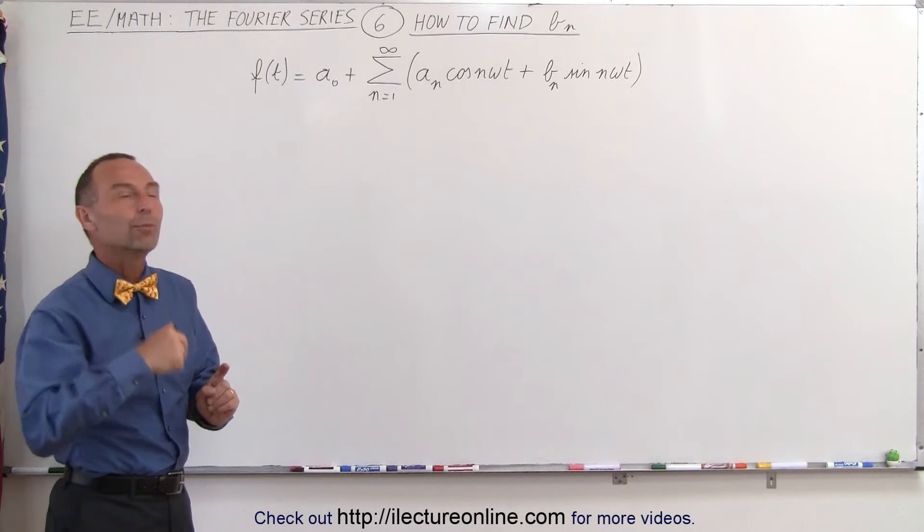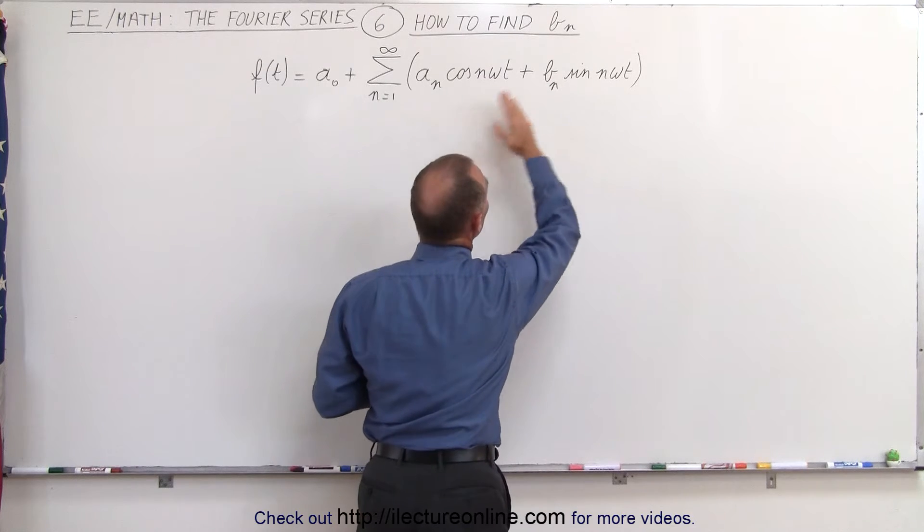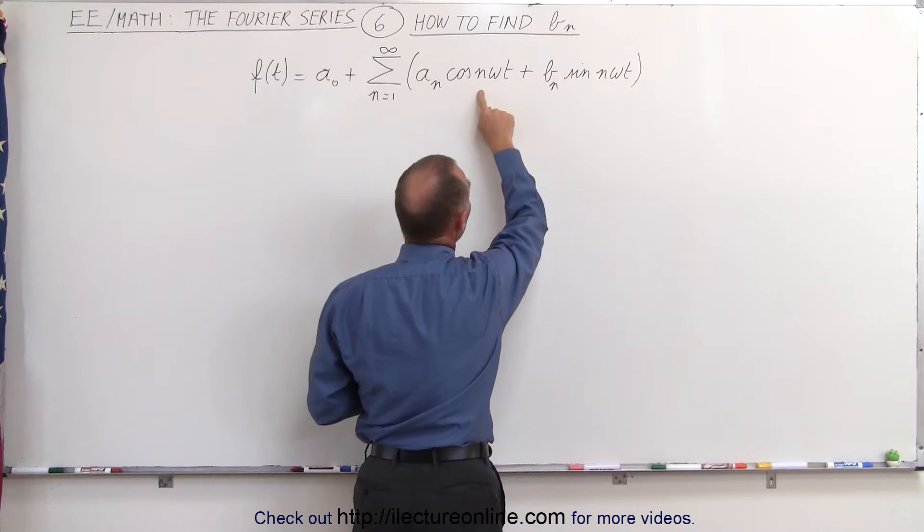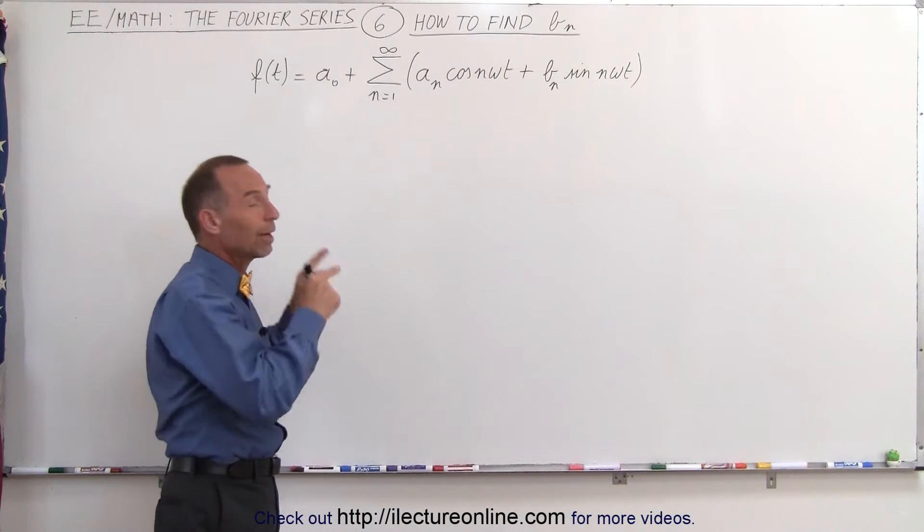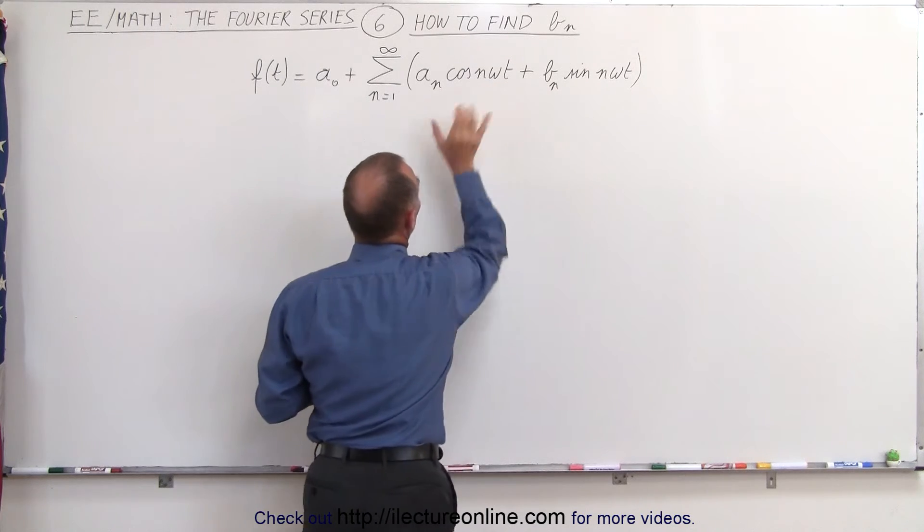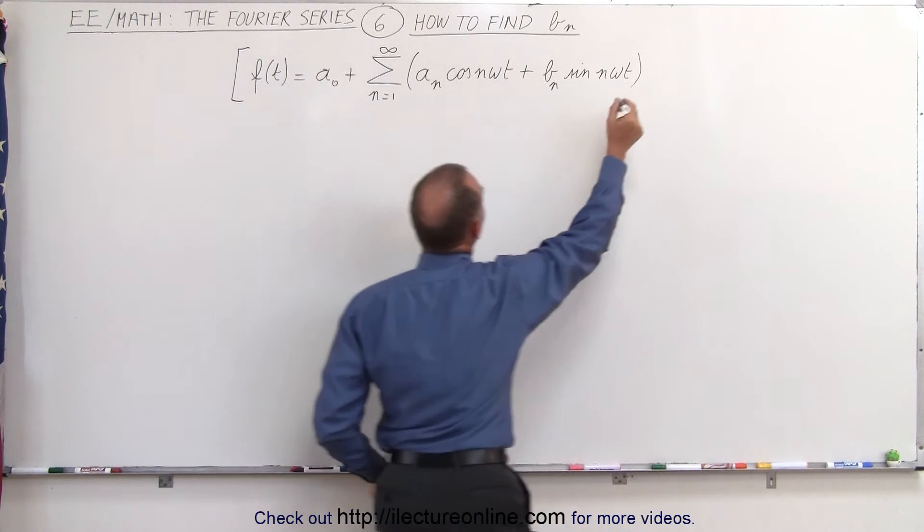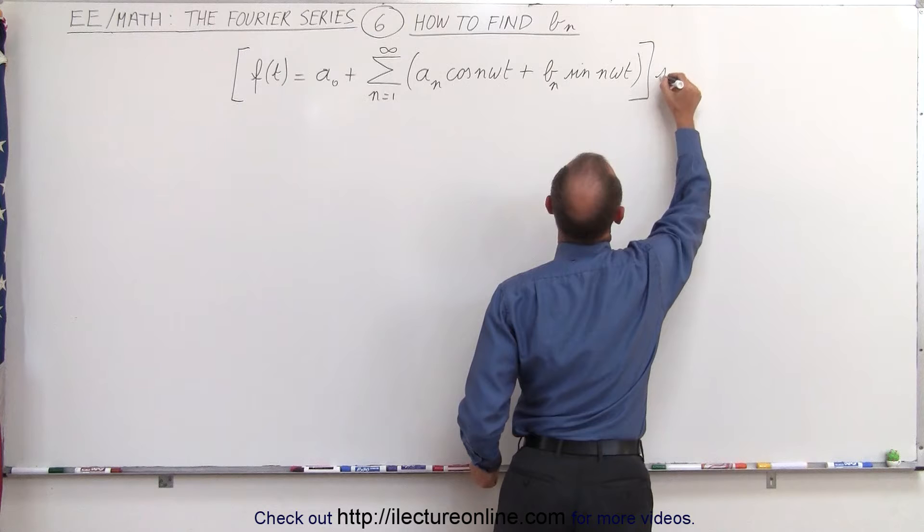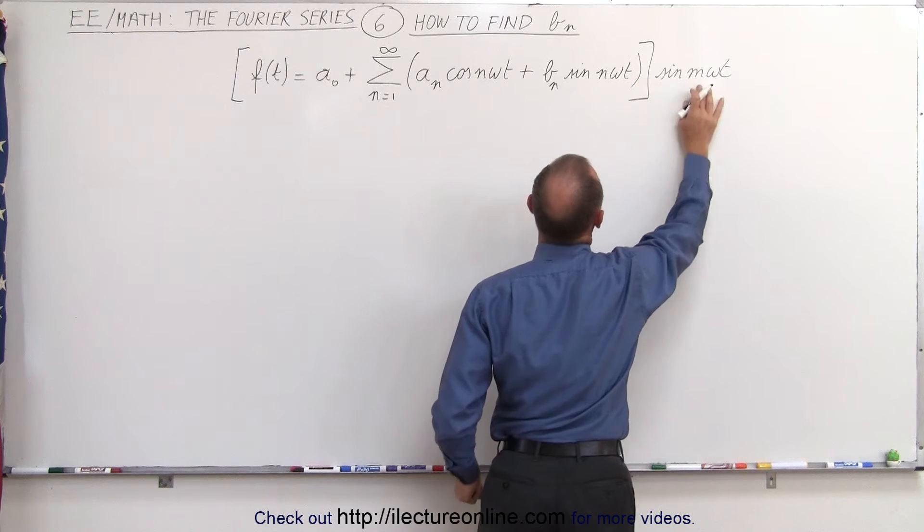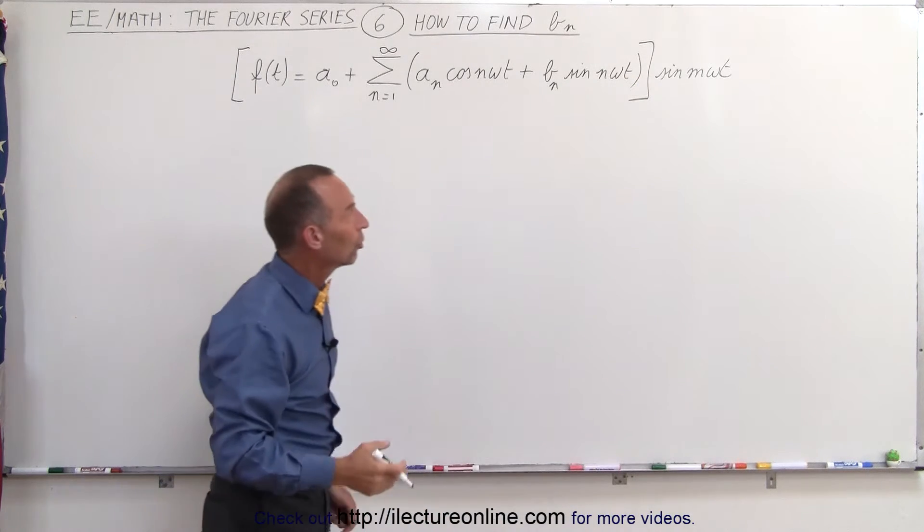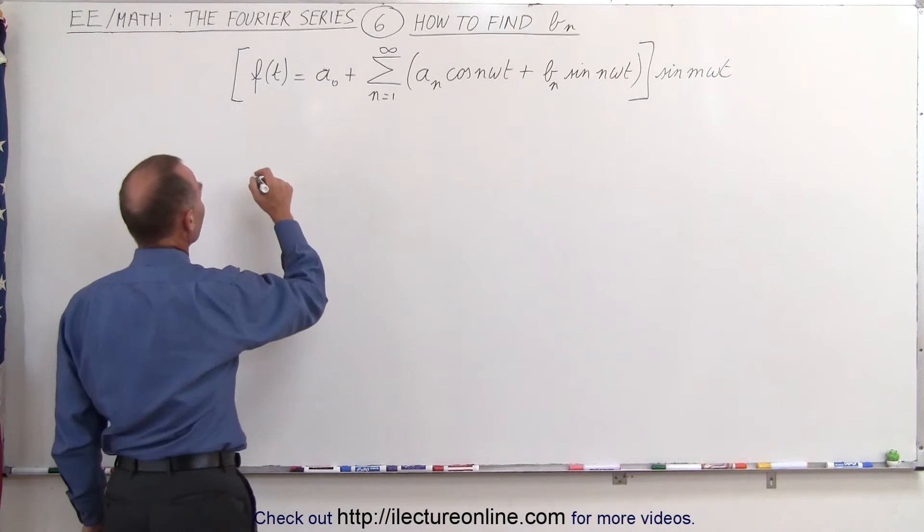The method is exactly the same as we did in the previous video, except this time we want this term to survive, which means instead of multiplying both sides of the equation by the cosine of m omega t, we're going to multiply it times the sine of m omega t, in such a way that when we integrate both sides, this term will survive and this term will equal 0. In other words, we're going to multiply the left side and the right side of the equation by the sine of m omega t. Notice that we use a different constant, n and m here. That means m can be any integer, so can n be any integer. When we do that, the left side becomes as follows.